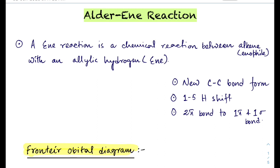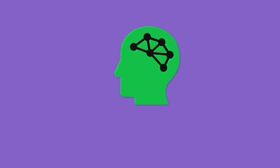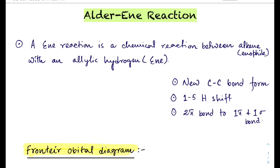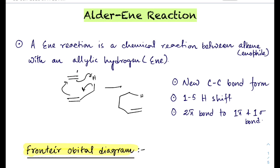Hi, this is Basic Chemistry. Today our new name reaction is the Alder ene reaction. The ene reaction is generally a chemical reaction between an alkene, also known as the enophile, with an allylic hydrogen, also known as the ene. Before the reaction there are two pi bonds, but after the reaction there is one pi bond and one pi bond converting to a sigma bond.